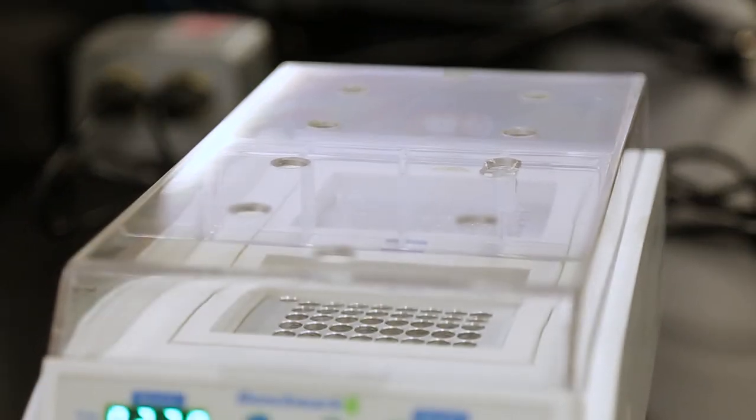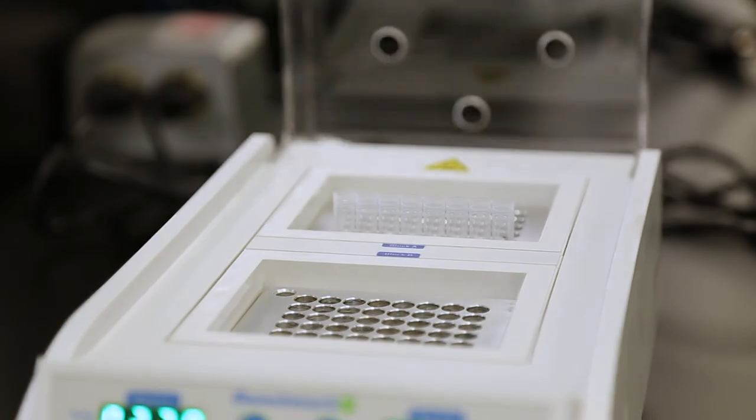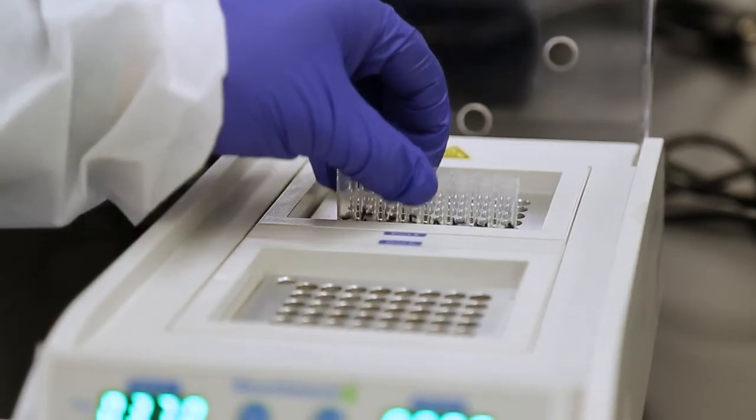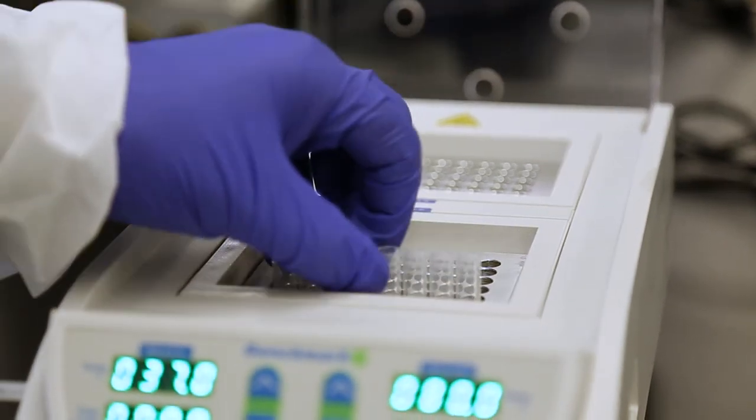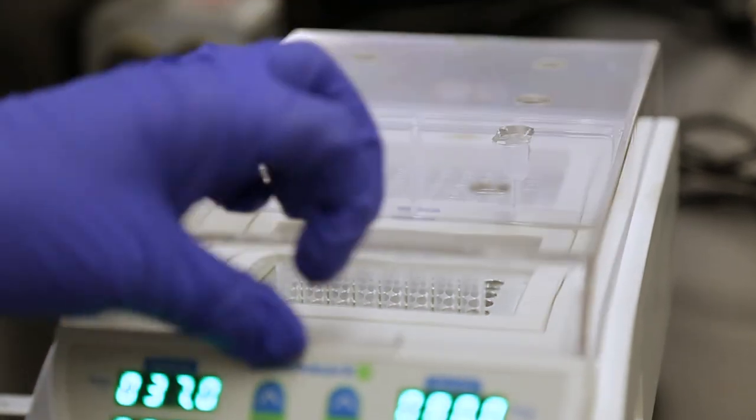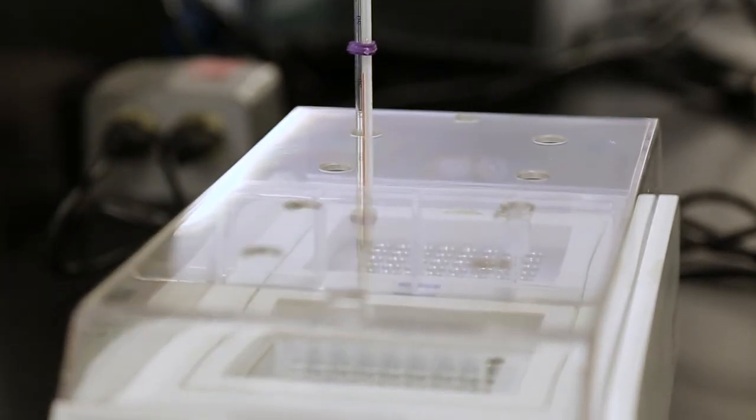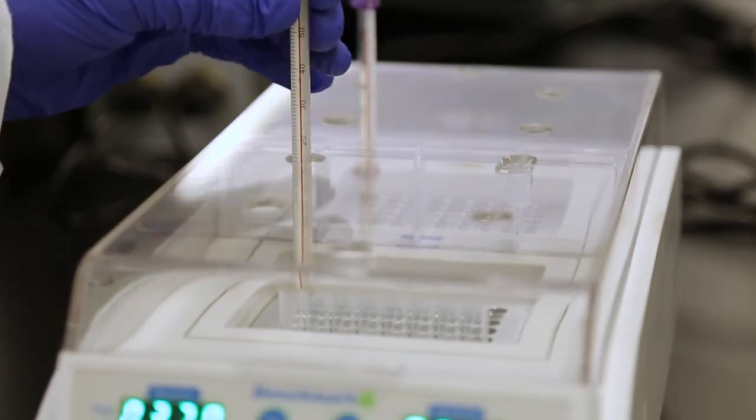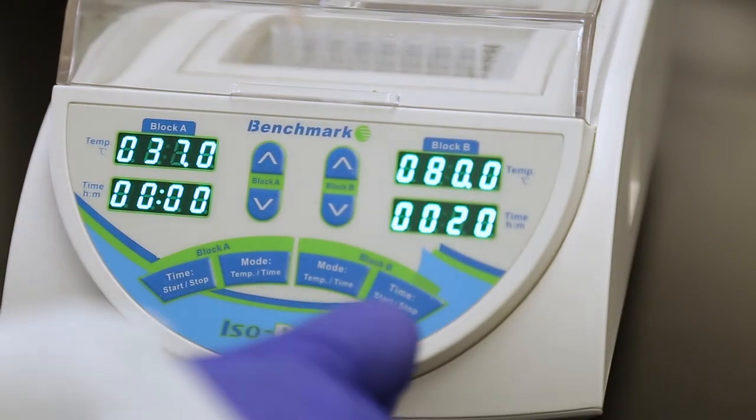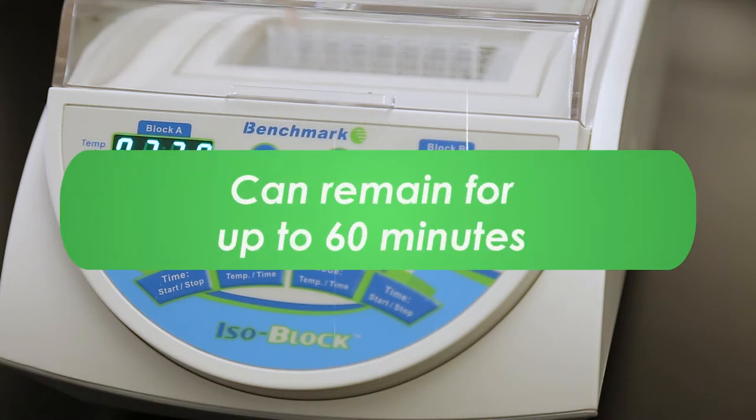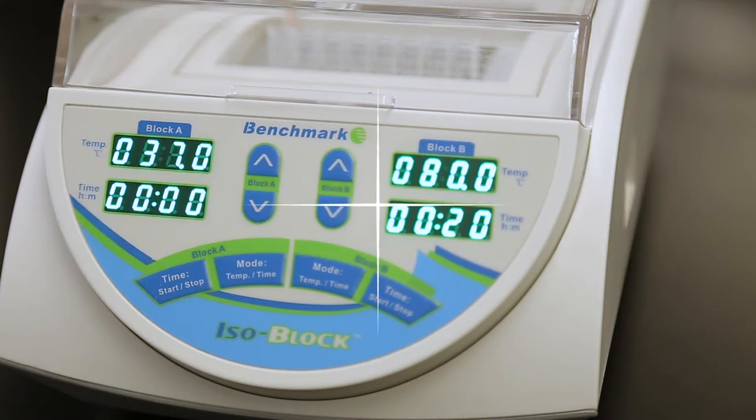After the 10-minute incubation is complete, remove the thermometers, if you place them back in, and immediately open the lid and move the cluster tubes to the 80 degrees Celsius block. Close the lid, and if you like, return the thermometers. Then, start the block B timer you set to 20 minutes. The cluster tubes can remain in this block for up to 60 minutes.